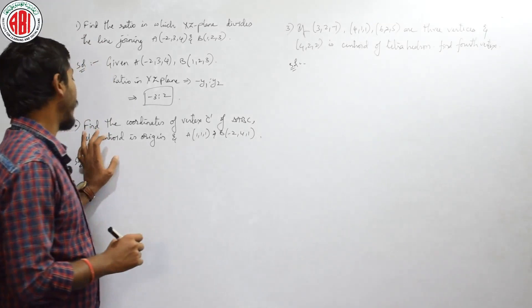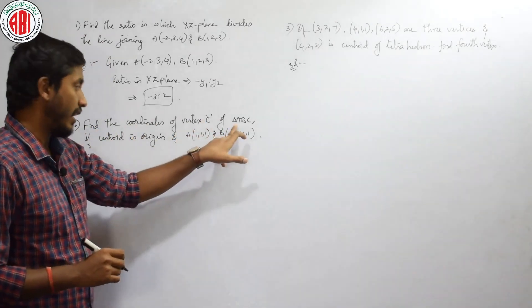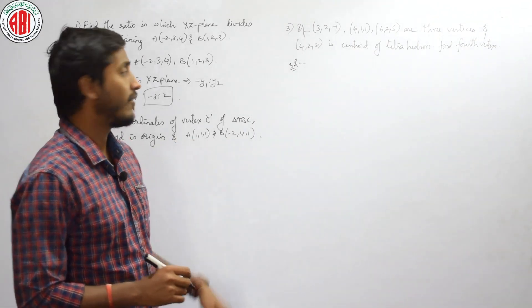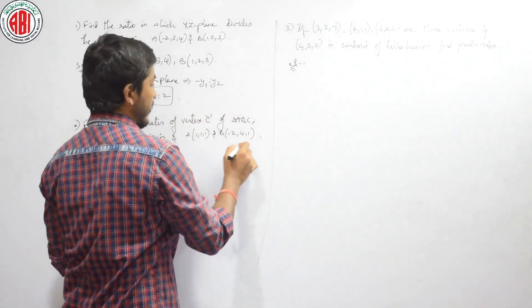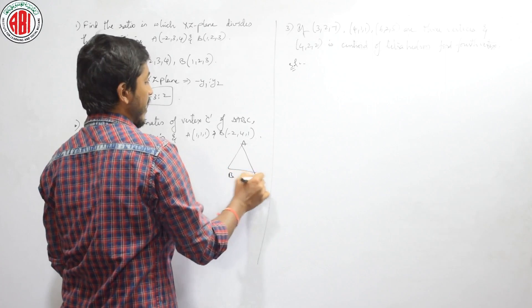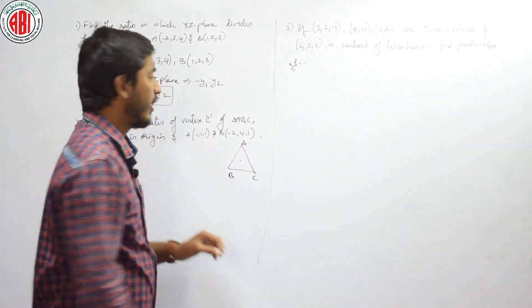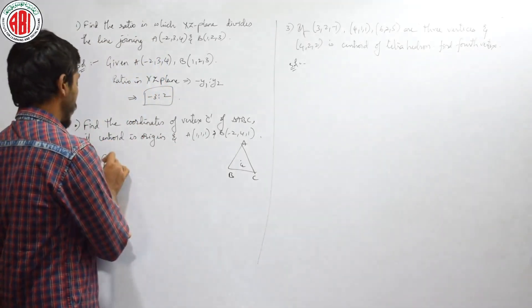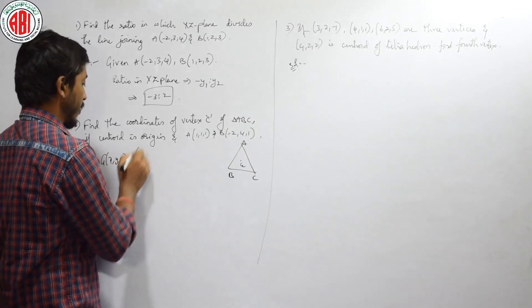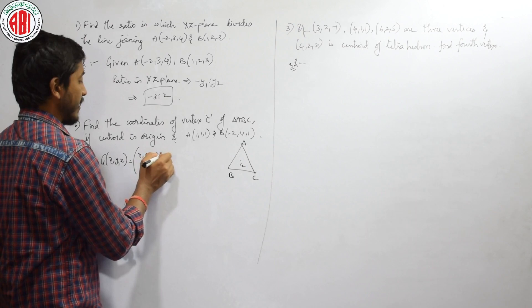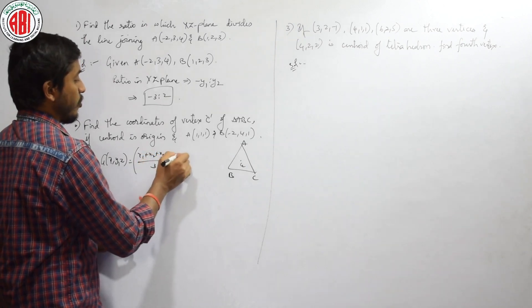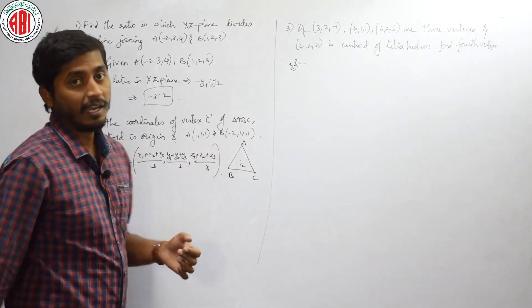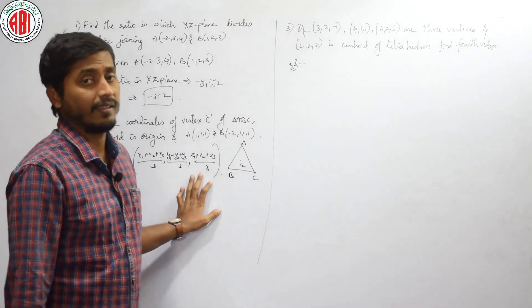He is asking to find the coordinates of vertex C of triangle ABC if the centroid is the origin and the AB points are given. Our triangle consists of 3 vertices A, B and C, and the centroid. Let us take centroid as G. The formula of centroid G of (X, Y, Z) is equal to (X1 plus X2 plus X3) by 3, (Y1 plus Y2 plus Y3) by 3, and (Z1 plus Z2 plus Z3) by 3. Since we have 3 coordinates, we will automatically get the third coordinate.